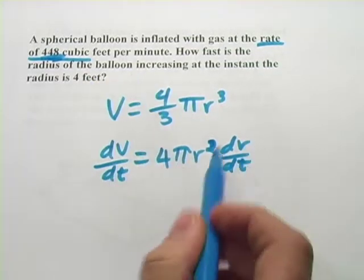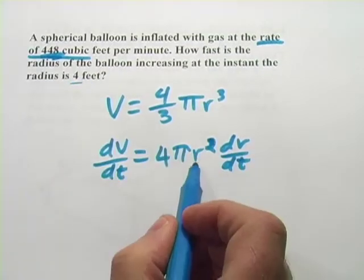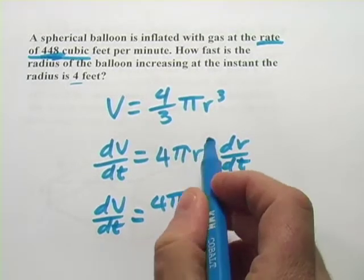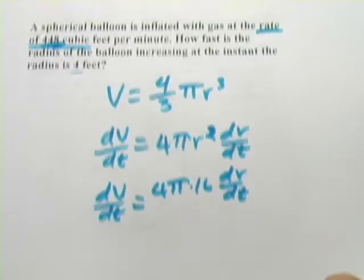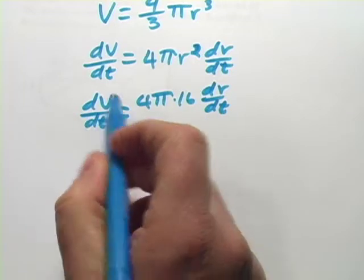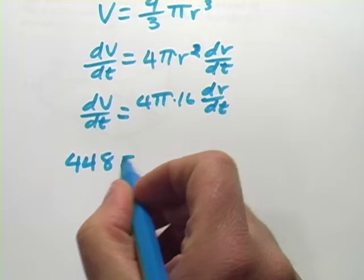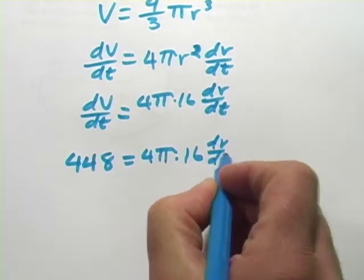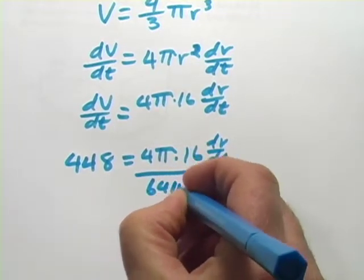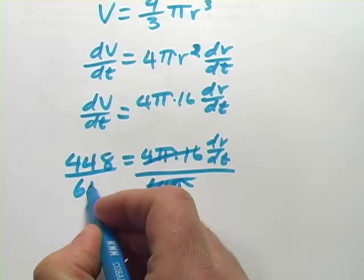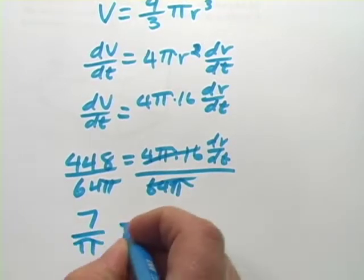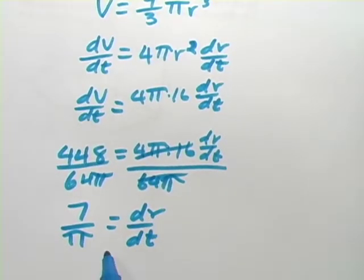Now the next part here is they're asking how fast this radius is changing when the radius is 4 feet. So that's what we can plug in for r here. So we got dv dt equals 4 times pi times 4 squared is 16 dr dt. And we can plug in our rate that they've given us for the, how fast the balloon is being inflated. That's 448 cubic feet for a minute. And now we have 4 times pi times 16 times dr dt. And all we really have to do is divide by 4 pi times 16. So that's actually 64 pi. So that would cancel and divide this by 64 pi. And let's see, 448 divided by 64, I think that's going to be 7 over pi equals dr dt. So the rate at which the radius is changing at that moment when the radius is 4 feet is 7 over pi.